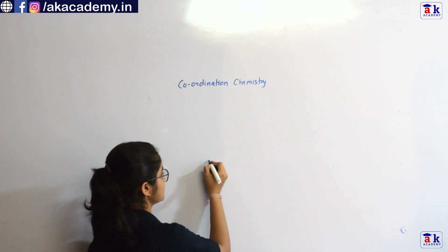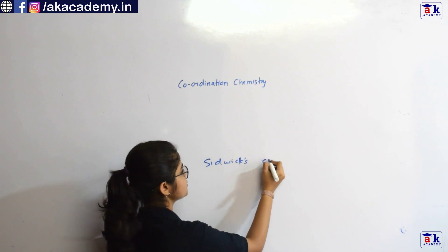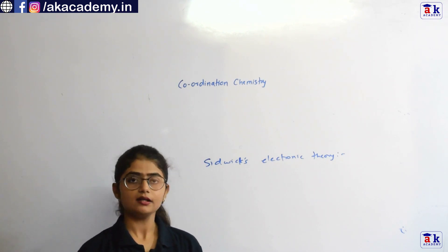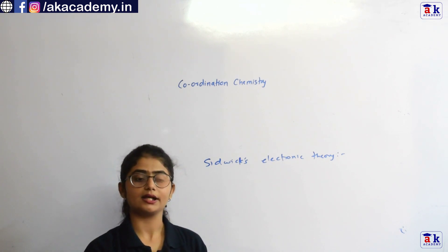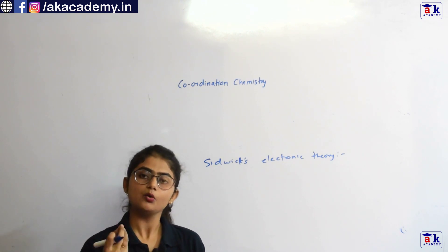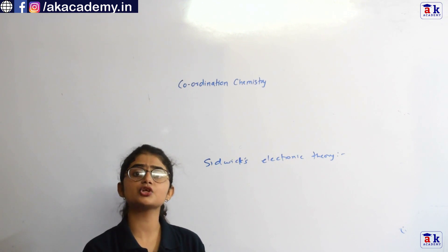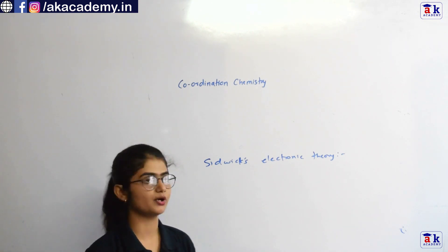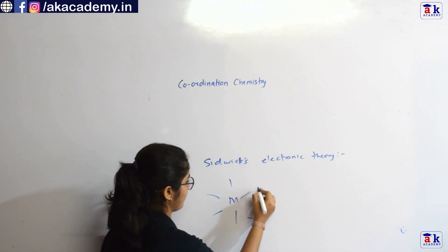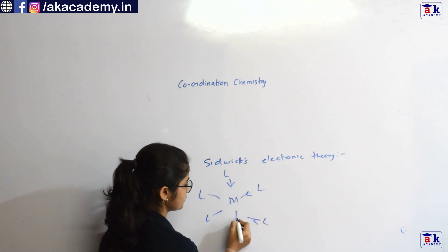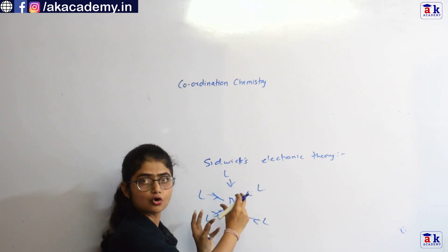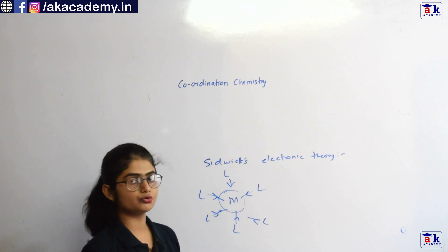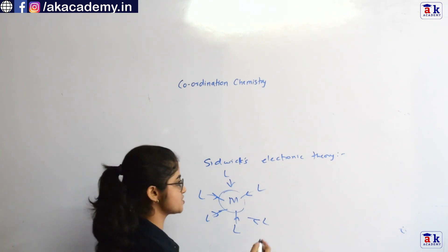The next theory to discuss is Sidgwick's electronic theory. It says that ligands donate an electron pair to the metal atom. If every ligand donates one lone pair of electrons to the metal, there will be a large accumulation of negative charge on the central metal atom, making the complex overall unstable — but this is not true, as coordination compounds are quite stable. This discrepancy was explained by a principle called the electroneutrality principle.